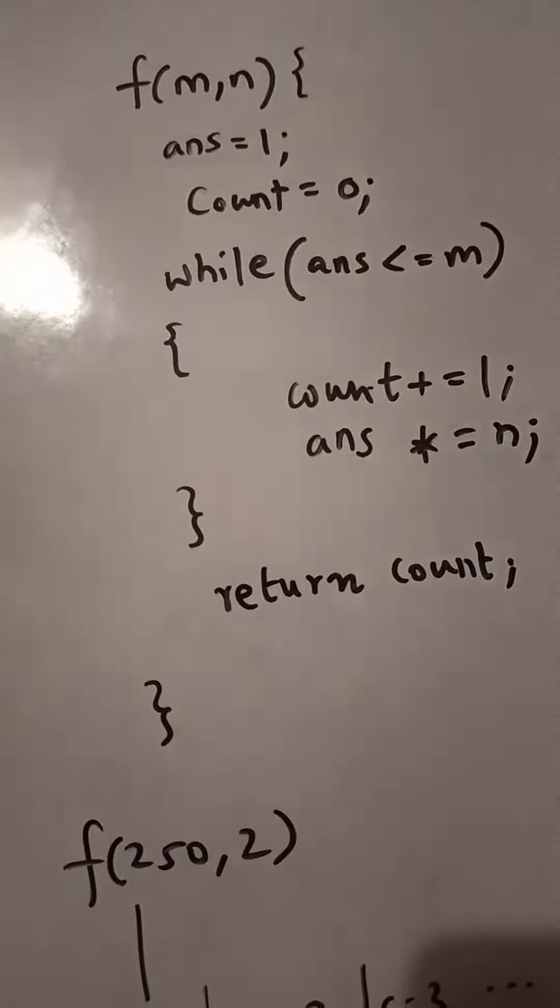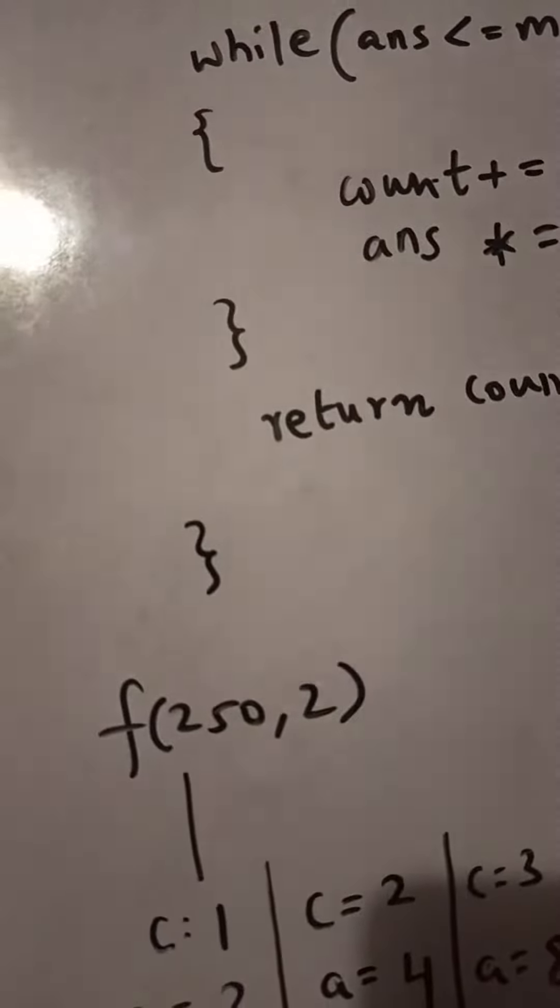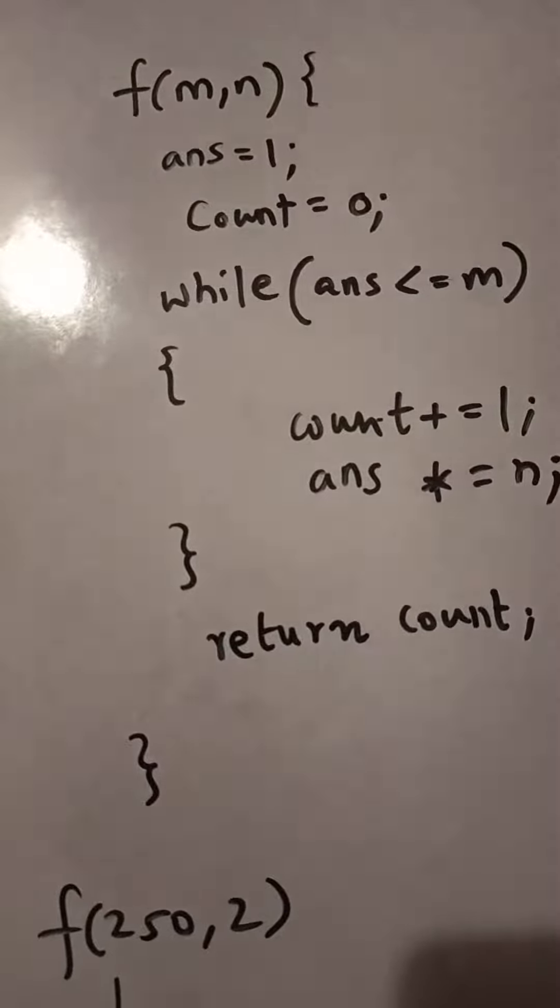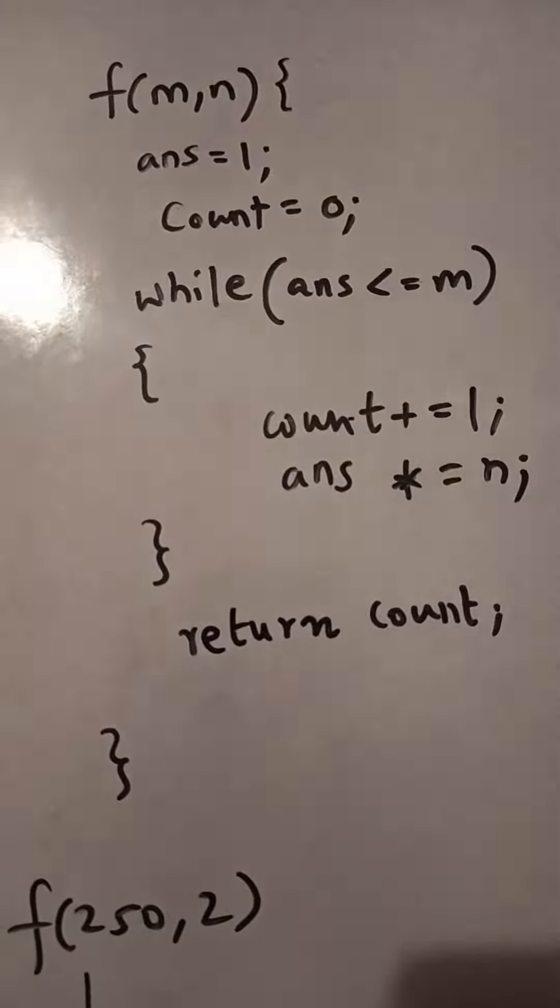In the question we are given f(250, 2), so m is 250 and n is 2. Initially answer is 1, so 1 is less than 250, so it will enter the while loop.